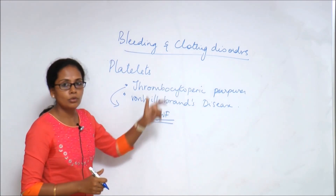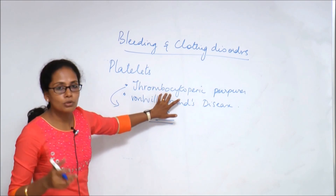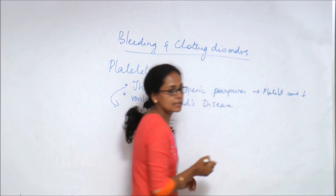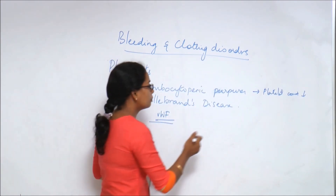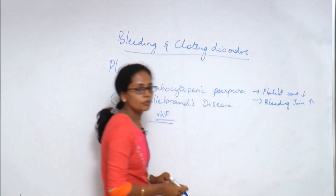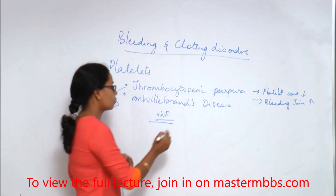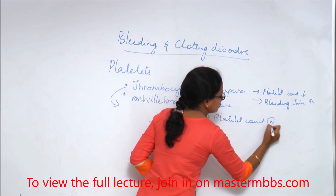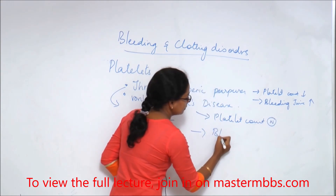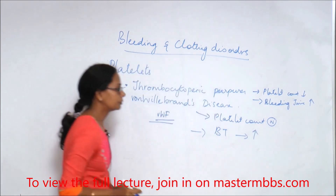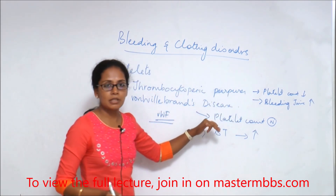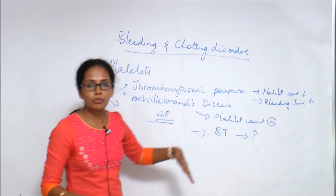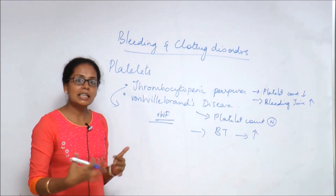How do you differentiate these two? In thrombocytopenic purpura, the platelet count will be decreased and bleeding time is increased. Whereas in von Willebrand disease, the platelet count is normal but the bleeding time is also increased. In both conditions, bleeding time is increased. But in von Willebrand disease the platelet count is normal, whereas in thrombocytopenic purpura the platelet count is reduced.